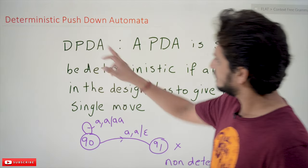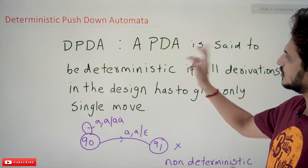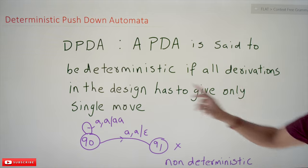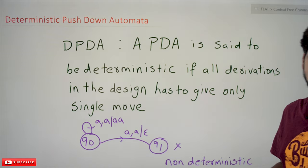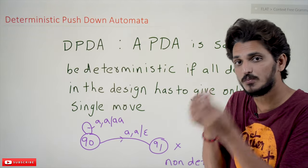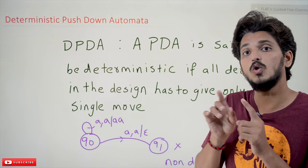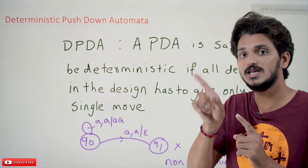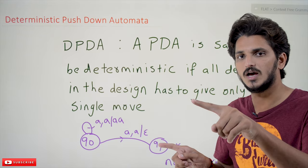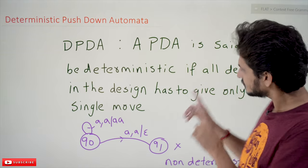Coming to today's class: a pushdown automata is said to be a deterministic pushdown automata if all derivations in the design give only a single move. When we discussed finite automata, we said that if you take an input symbol and apply it on a state, you have to move to only one single state. If you are moving to two different states, that is not deterministic.